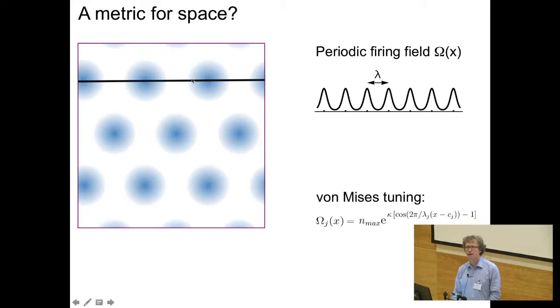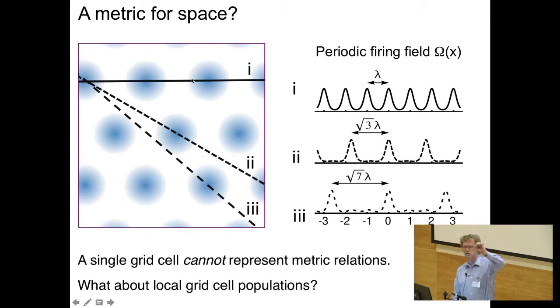Now, can this really be a metric for space? Nobody can force the animal to run on a straight line, let alone in a particular direction. If the rat or mouse runs in a different direction, it would not be able to use the distance between firing fields as a measure because, depending on the angle, the distances between consecutive blobs are very different. Maybe the rat decides to run in circles, coming back to the same location. Then there is no way to use these neurons for a metric.